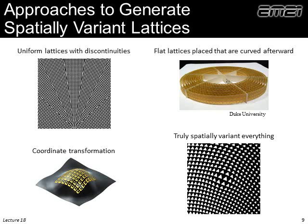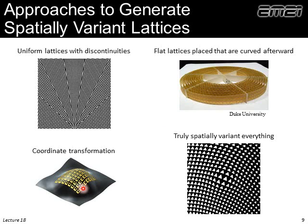There are other approaches to generating spatially variant lattices. One is taking uniform lattices, chopping them apart, reorienting them, and putting them together — a segmented approach. The problem is discontinuities: we get scattering and diffraction where the lattices are discontinuous. We also see things like the Duke University cloak, which is uniform in cylindrical coordinates but bent for manufacturing. There are also coordinate transforms, where we make a flat uniform lattice and bend it.